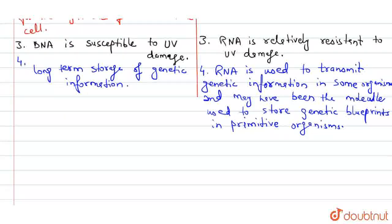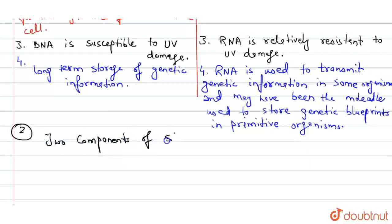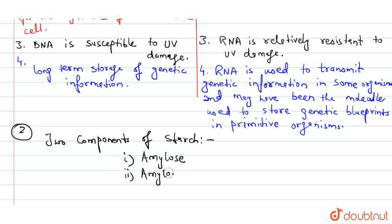Let's jump to the second question: what are the two components of starch? The two components of starch are, number one, amylose and number two, amylopectin. Among these, amylose is the water-soluble component of starch.